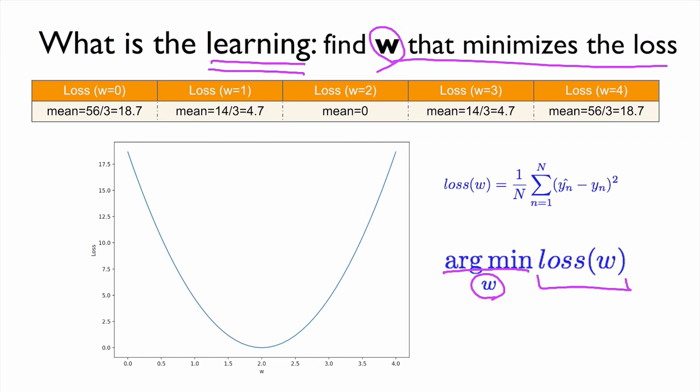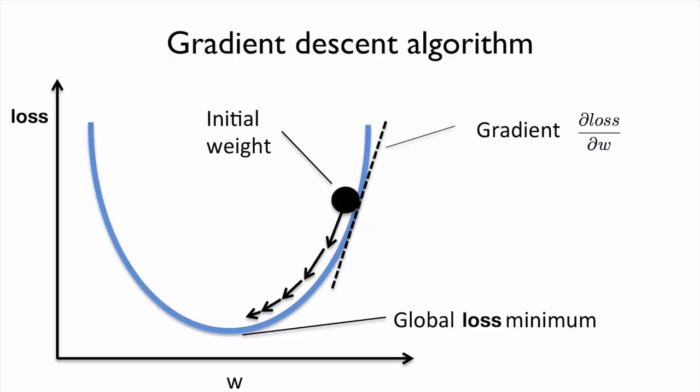In this case, it's impossible to compute this W manually. So we have to develop some systematic way that automatically identify this W. So this algorithm is called the gradient descent algorithm.